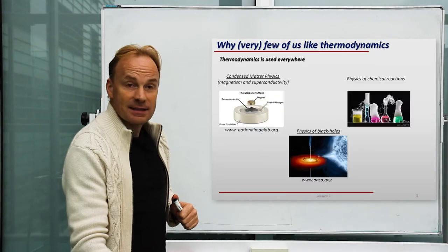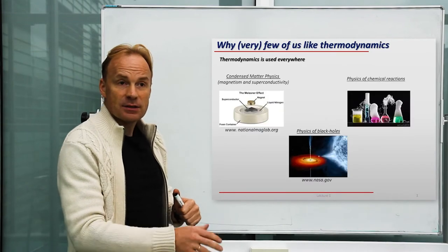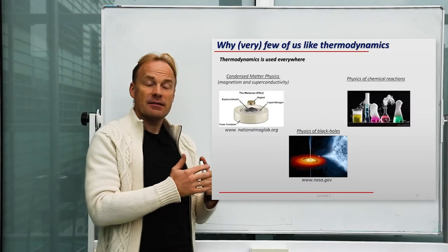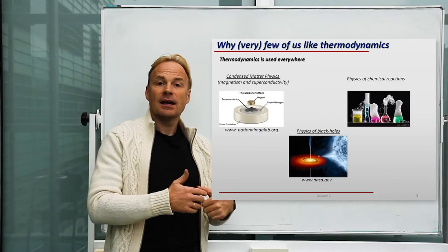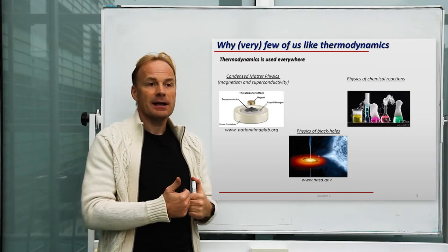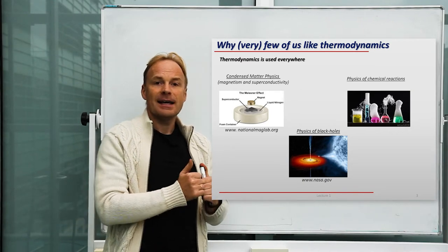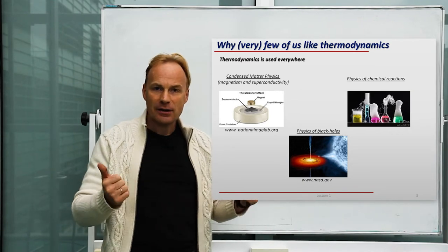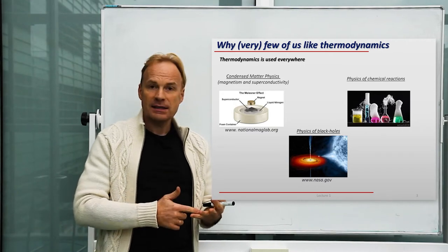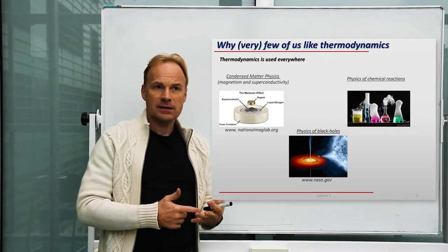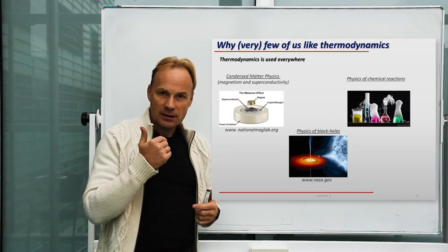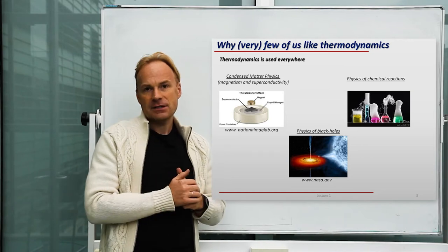But next to these disadvantages, we also have advantages: thermodynamics and the laws derived in theory of heat can be applied practically in every area of physics — condensed matter physics including magnetism and superconductivity, physical chemistry, and even astronomy.